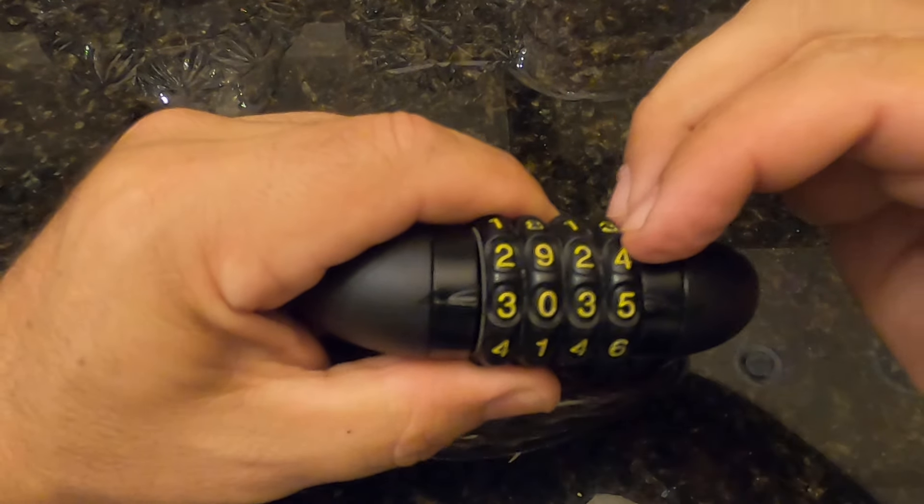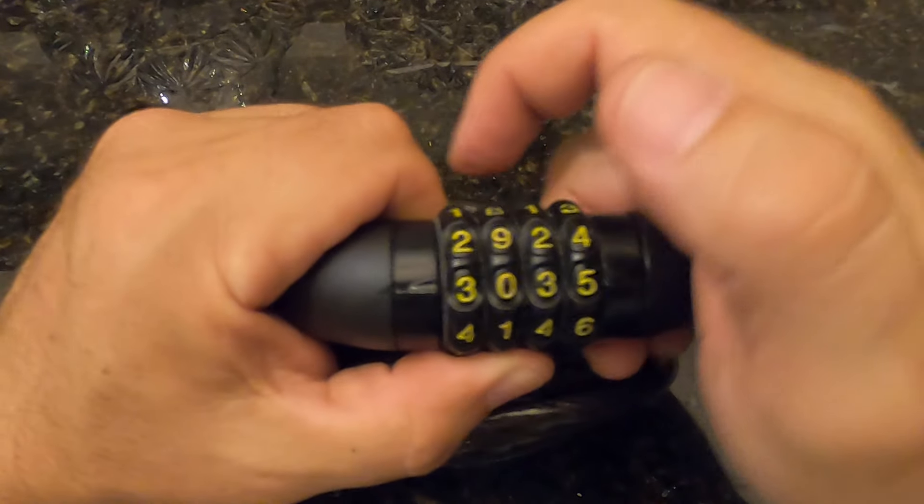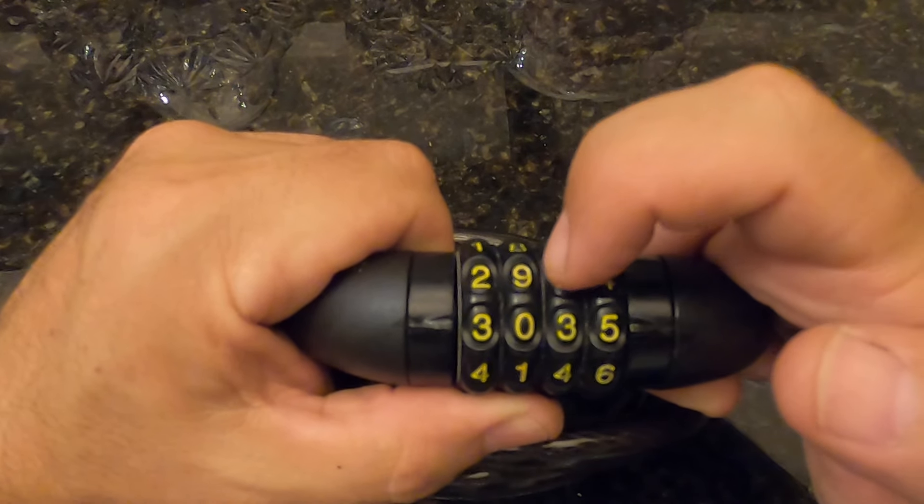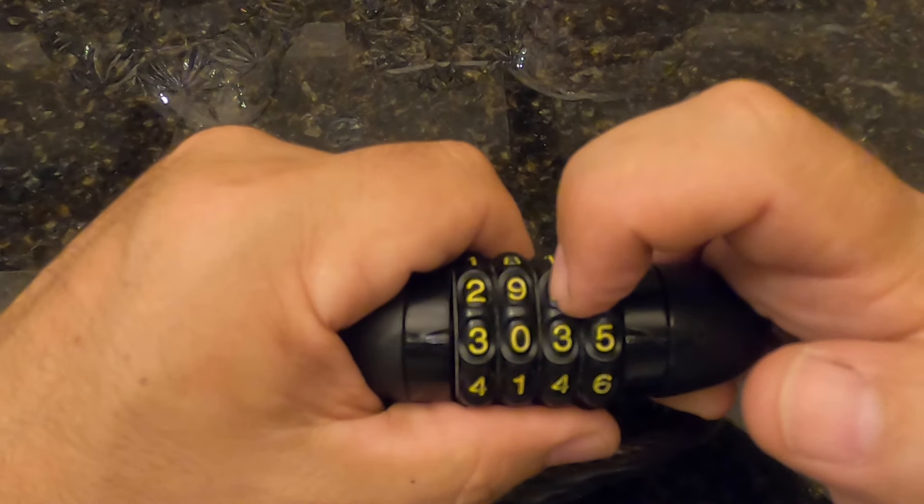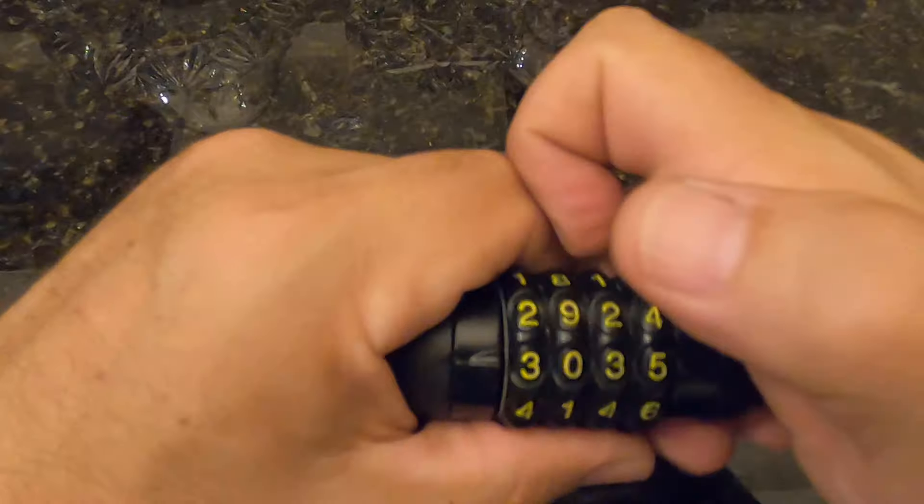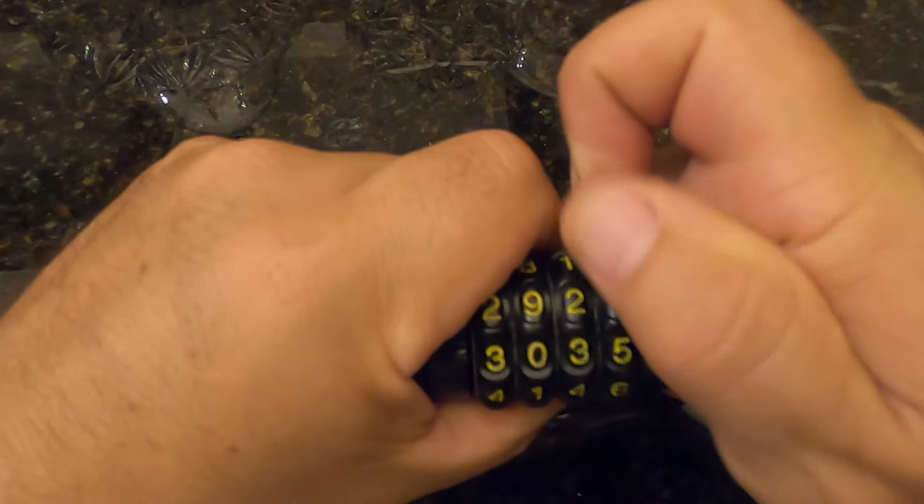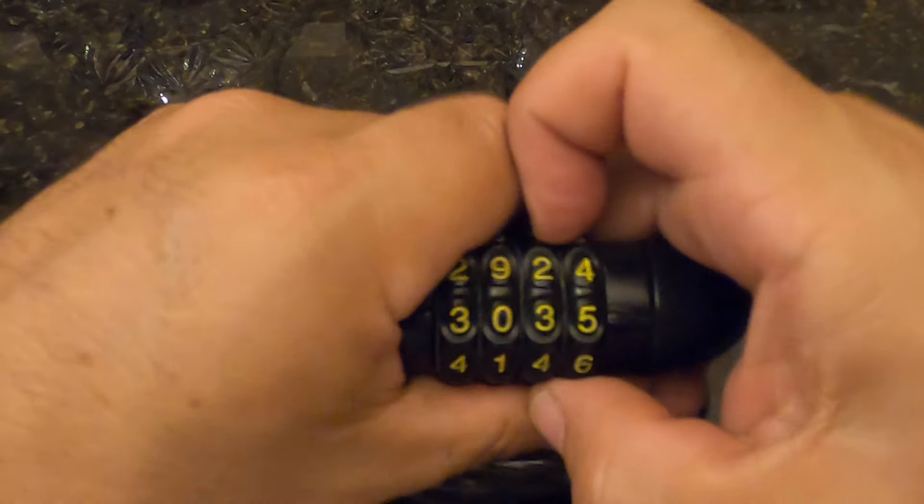We're going to go from this side to this side so that as we apply tension and we solve each wheel, the tension will move to the next wheel and to the next wheel and to the next wheel. And that'll be better for being able to feel the answer here.